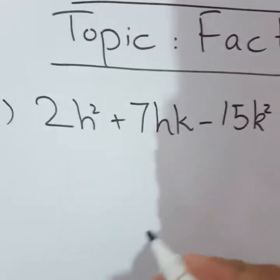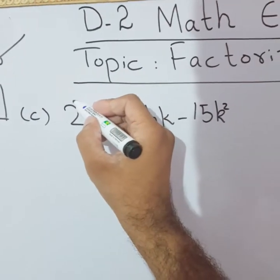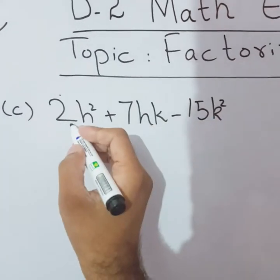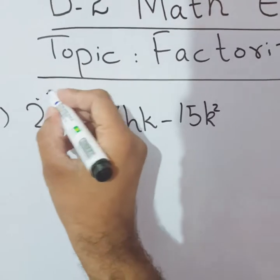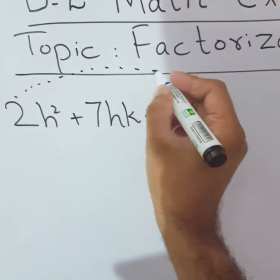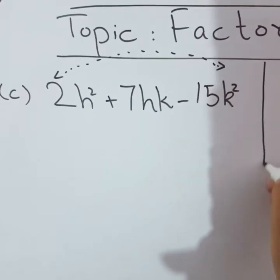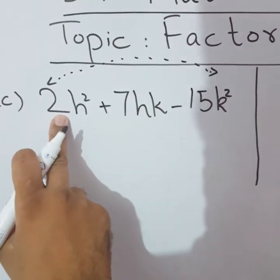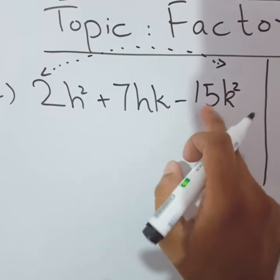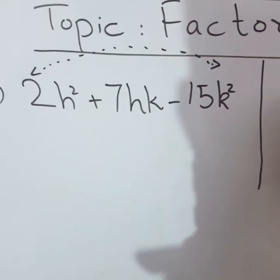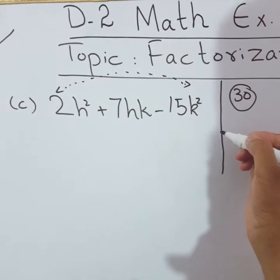First of all, I will repeat from the previous lecture that we need to look at the first and last terms. Here we have 2h² and 15k². We need to join these two with a lead pencil by drawing an umbrella. The purpose of this umbrella is that the coefficient of h² is 2 and the coefficient of k² is 15. So 2 times 15 equals 30. Write this as rough work on the side.